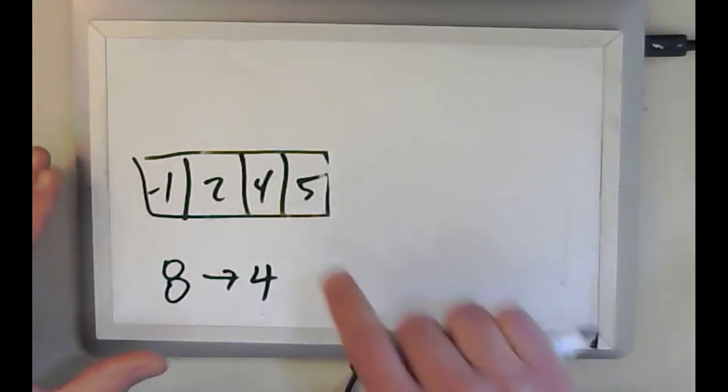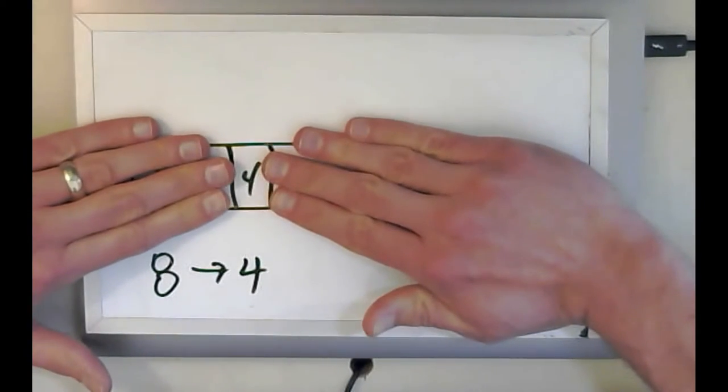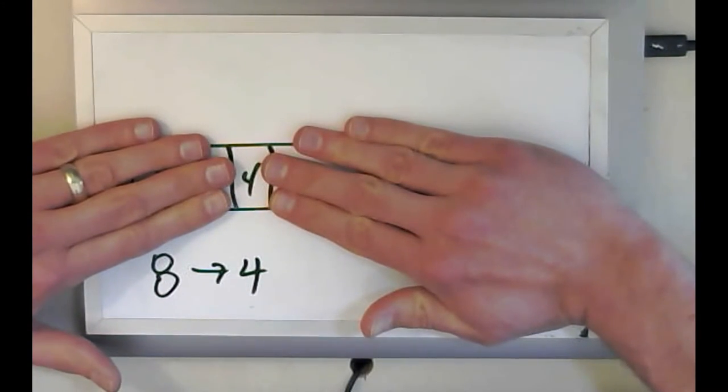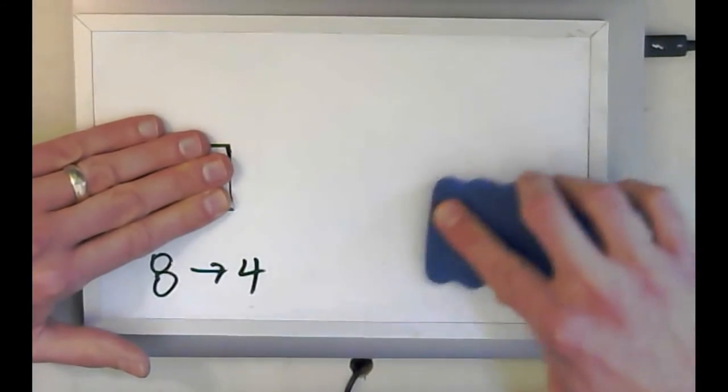So I do the same thing. I pick four. And now again, same thing. Should I remove my right hand or my left hand? Well, three is less than four. So I know if it's in the array, it's going to be in the left part of the array. And again, I can essentially remove these values.